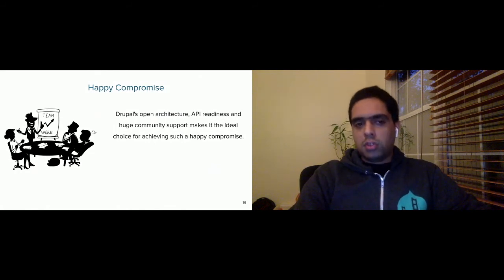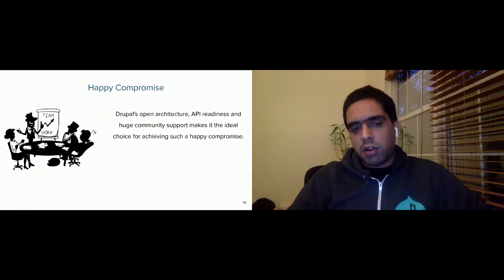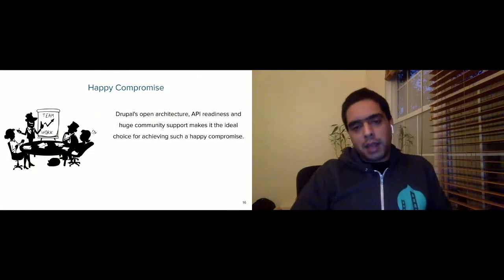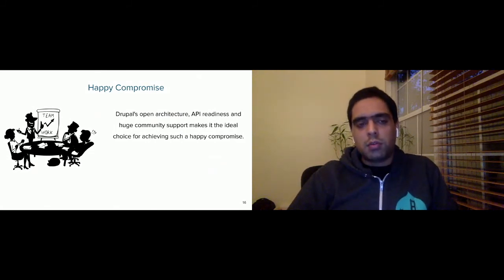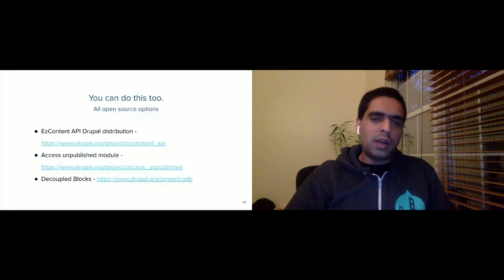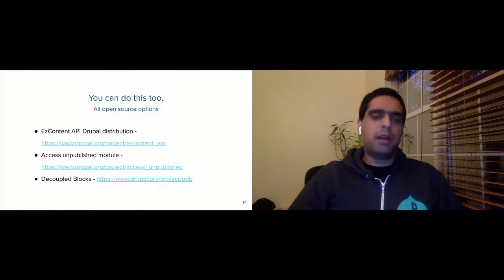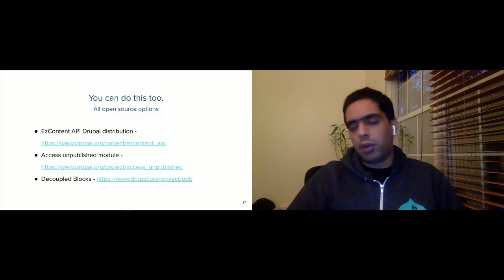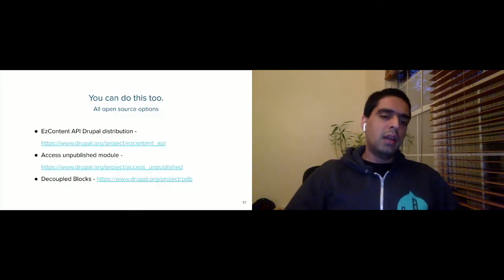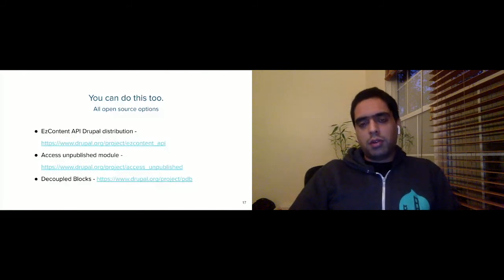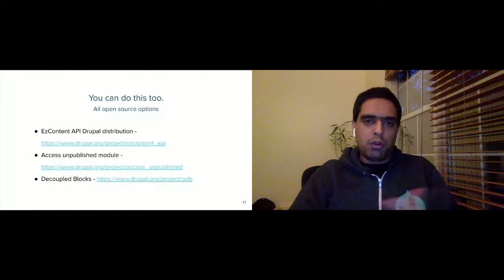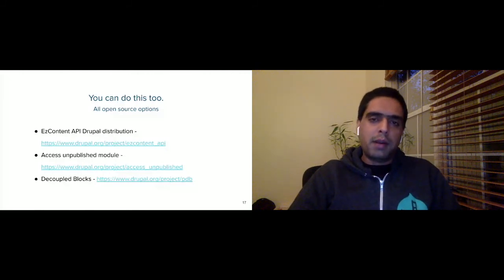You can take a look at the Easy Content Distribution, and there's a sub-module called Easy Content API focused on decoupled implementation. There are also individual modules like Access Unpublished if you just need the previewing-unpublished-content functionality. If completely decoupled isn't right for your project, you can also consider progressive decoupling, which is covered in Dries's blog as well. I'd also recommend reading Preston's full blog post series, which talks about the grand compromise needed between developer and non-developer needs — which is exactly what we've addressed today.